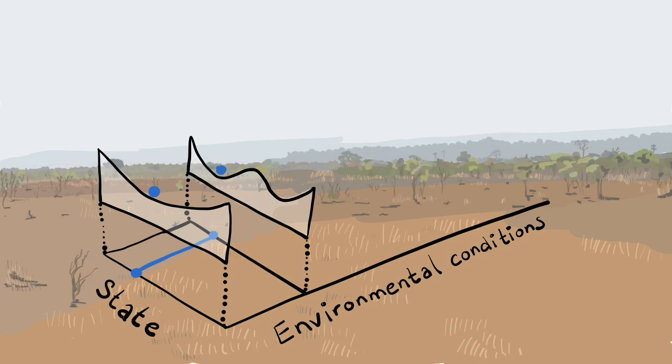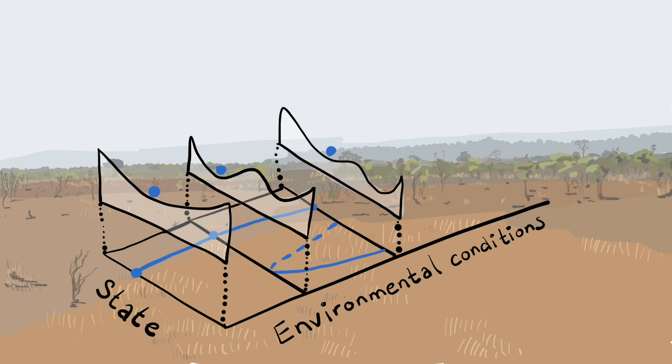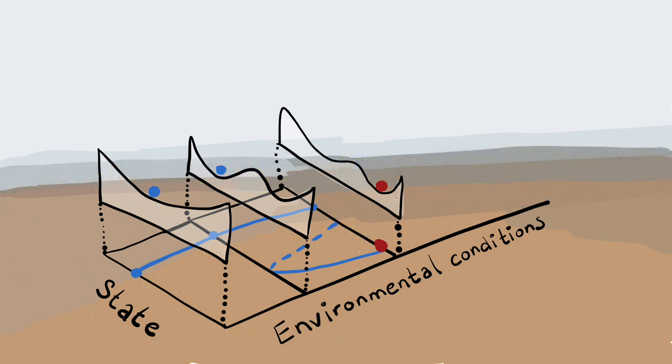If environmental conditions change further, it becomes easier to go from one state to the other. Now, only a minor disturbance can already push the ecosystem from a vegetated to a desert state.